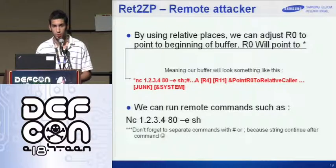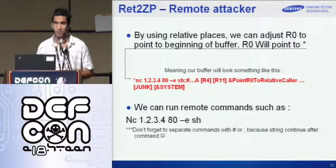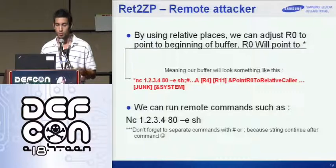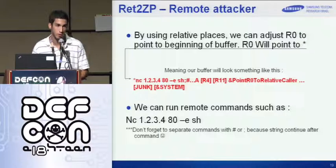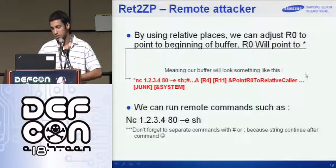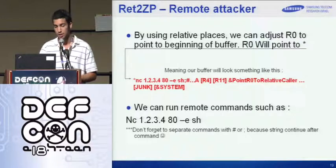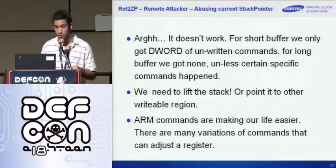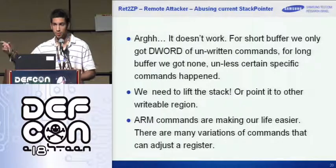But that's only good for local attackers. We can do more complex return oriented programming payloads, but let's keep it with the system function. If we can control R0 to point to a relative path at the beginning of our buffer, we can put any command — like netcat with a reverse shell. For short buffers we only get a few bytes of writable commands; for long buffers we get none. So we have to stack lift.